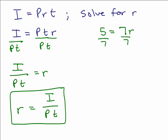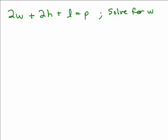Okay, let's do another one. All right, here is another formula. This has to do with perimeter. 2W plus 2H plus L equals P. So we're going to solve for W. So first you find the variable W and it's over here, right, and that's the only W.